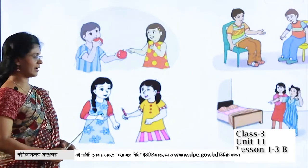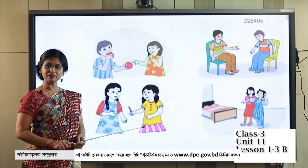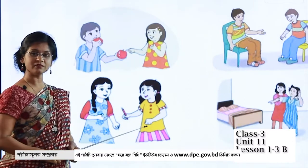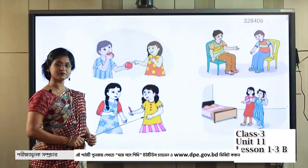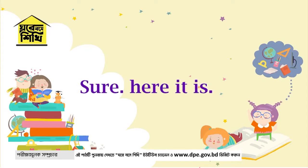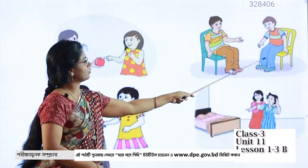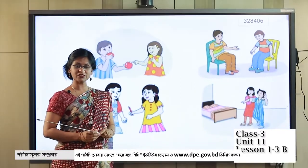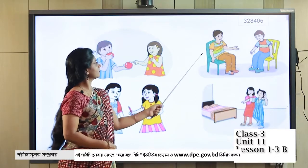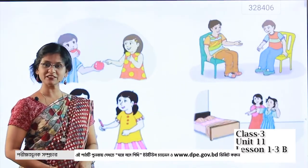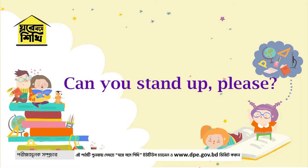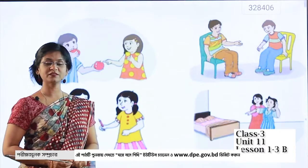And then there is a pencil, and she wants it. What will she say? 'Can you give me a pencil?' The answer will be: 'Sure, here it is.' Then for the instruction — he will say: 'Can you stand up, please?' And then the response: 'Yes, of course.'